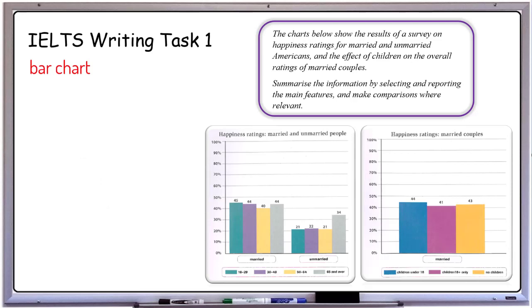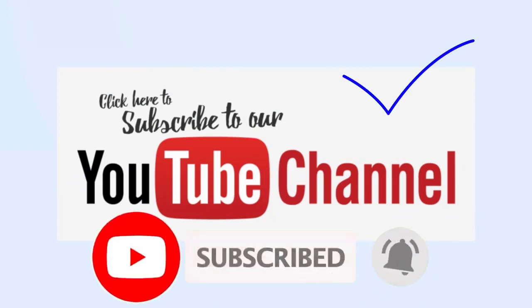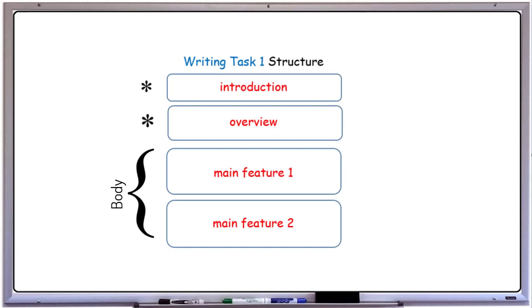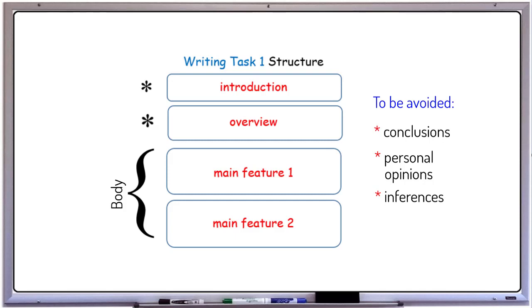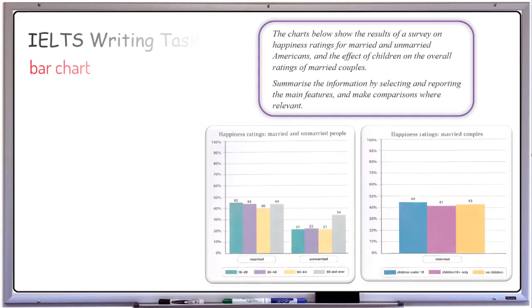Now we need to see how we can go about structuring our summary. But before that, please remember to subscribe to this YouTube channel and turn on the notification so that you don't miss out on any of the upcoming episodes. As you know, your summary is made up of three parts: namely, an introduction, an overview, and two or three body paragraphs. Once again, some of the things to be avoided in task 1 are conclusions, personal opinions, as well as inferences. If you need more information on this, please watch the previous episode on line graphs, in which I explained all about the organization of paragraphs, in particular the overview.